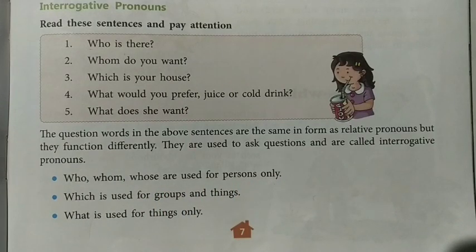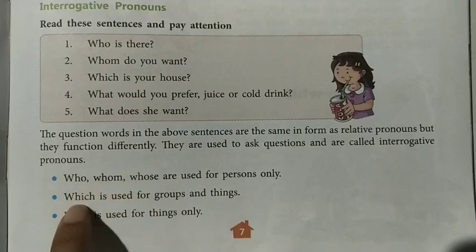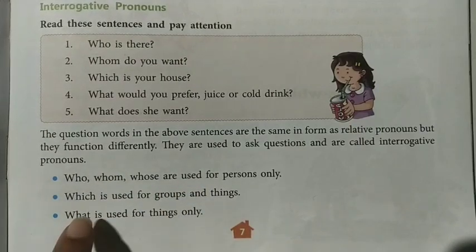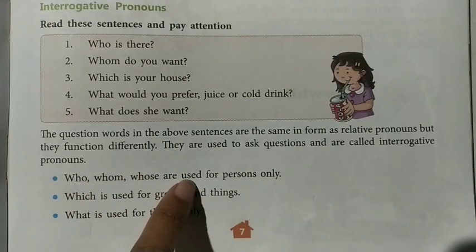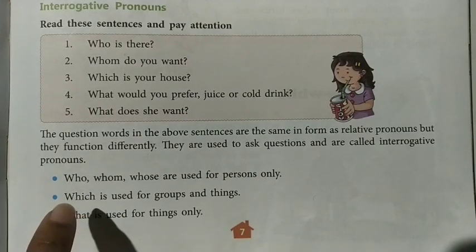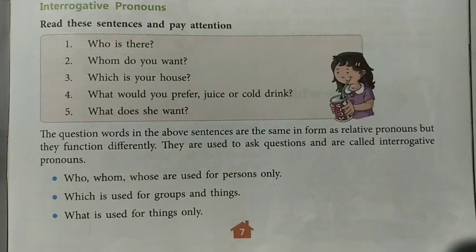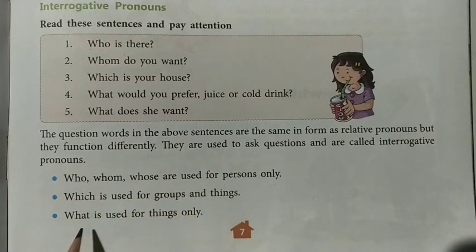Remember: 'who,' 'whom,' and 'whose' are used for persons only. 'Which' is used for groups and things. 'What' is used for things only. For example: 'Who are you?', 'Whom do you want?', 'Whose pencil is this?' — these are about persons. You cannot say 'What are you?' for a person. If talking about a thing, use 'what'; for groups and things, use 'which.'